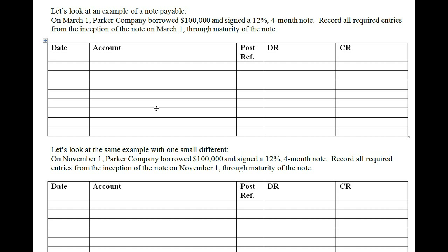To calculate the interest on a note, you take the face value times the interest rate times time — or principal times rate times time, abbreviated PRT. That formula gives us the interest for that specific note. Now that we understand that, let's look at an example of notes payable.